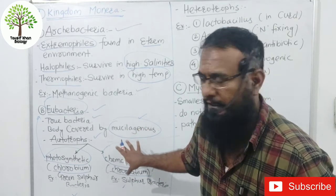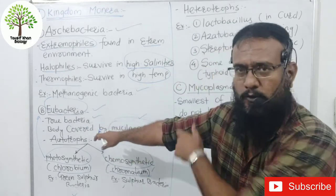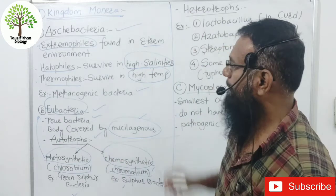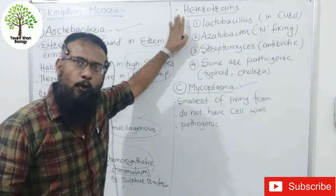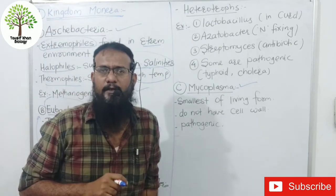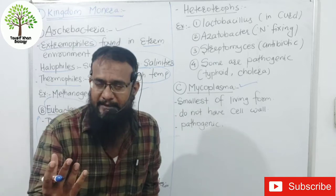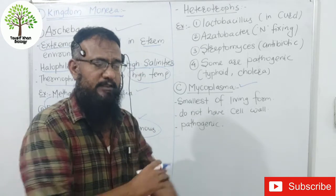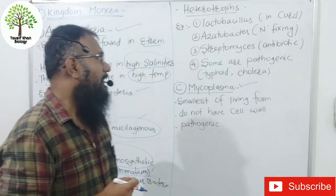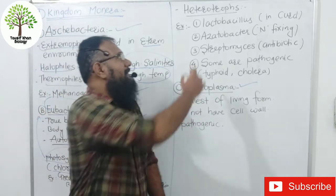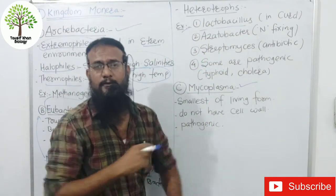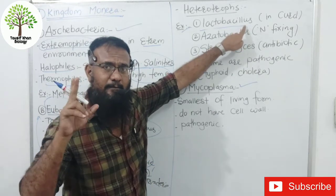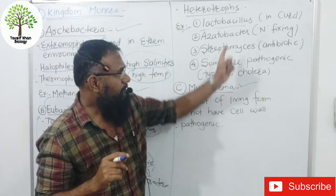The second type of Eubacteria is heterotrophs. Eubacteria heterotrophs depend on other organisms for their nutritional requirements. There are many examples. Lactobacillus is used to convert milk into curd. Lactobacillus is a rod-shaped bacteria — 'bacillus' refers to rod shape.